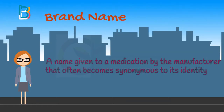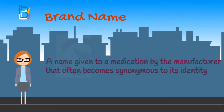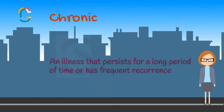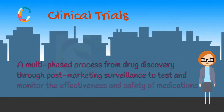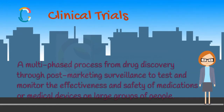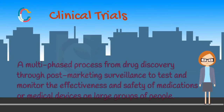Brand name — it is a name given to a medication by the manufacturer that often becomes synonymous to its identity; for example, Ritalin. Letter C. Chronic — an illness that persists for a long period of time or has frequent recurrence. Clinical trials — a multi-phased process from drug discovery through post-marketing surveillance to test and monitor the effectiveness and safety of medications or medical devices on large groups of people.